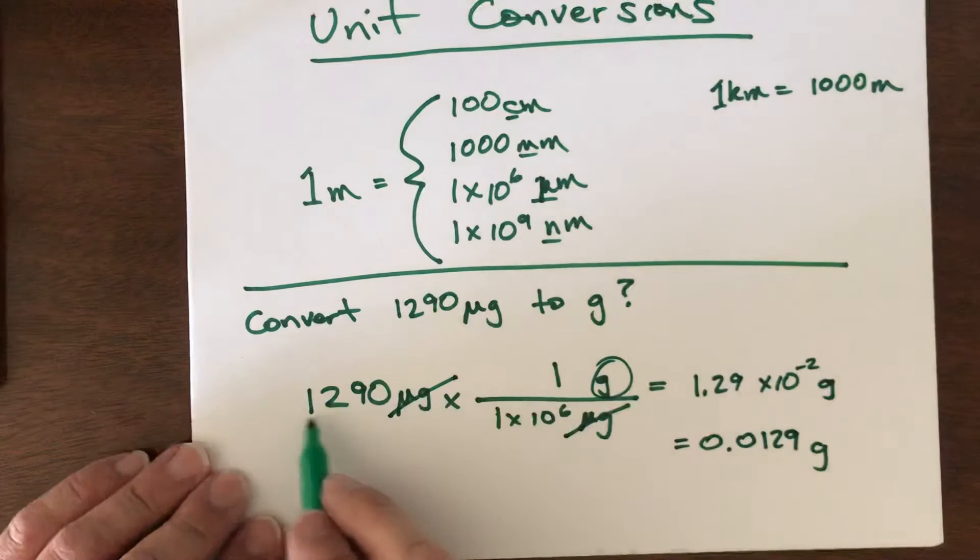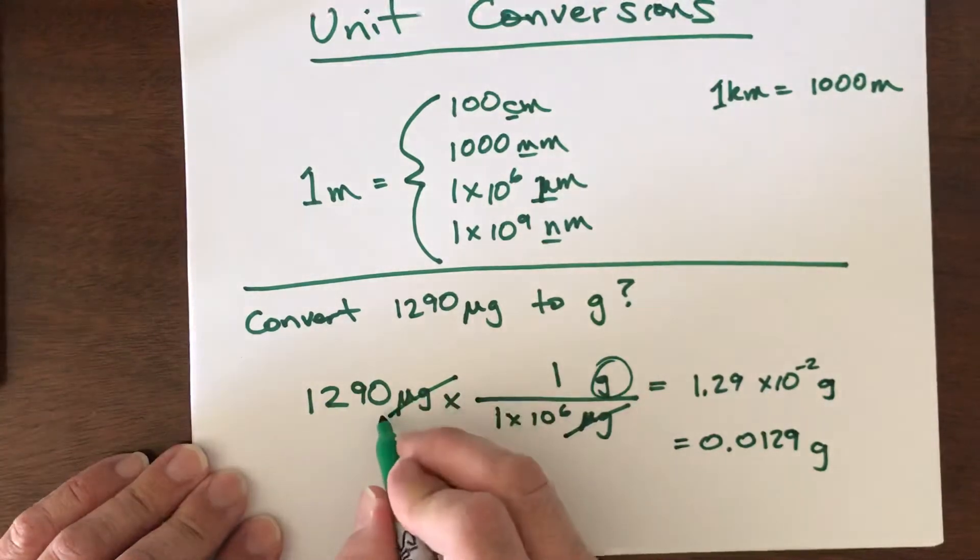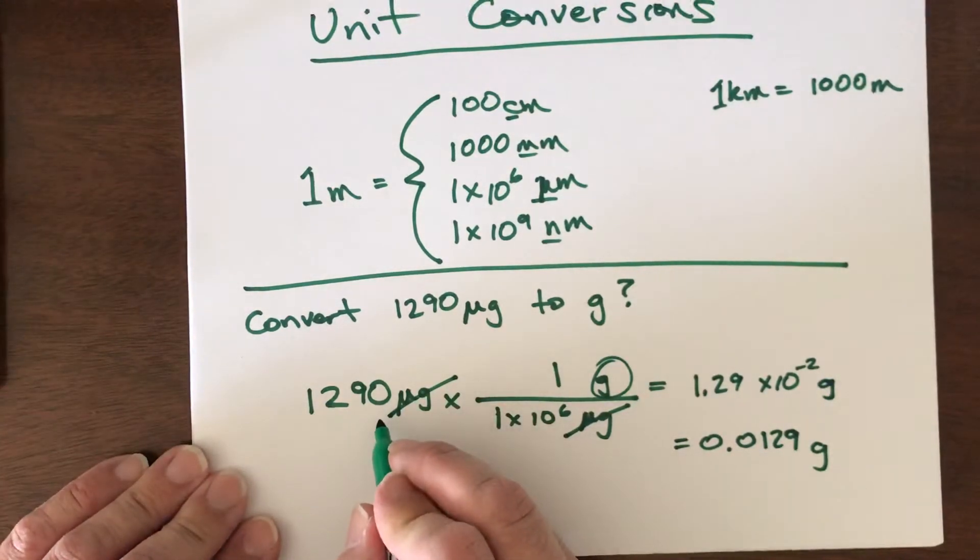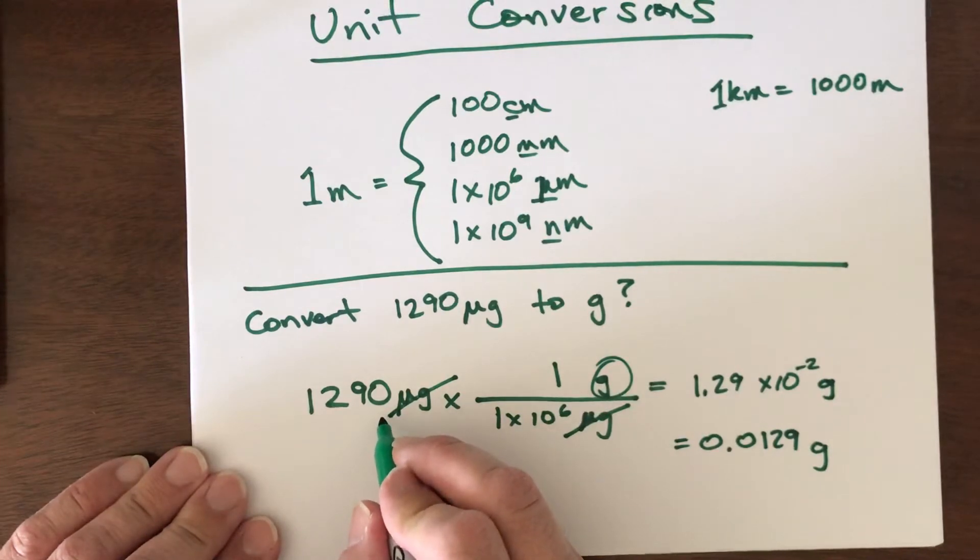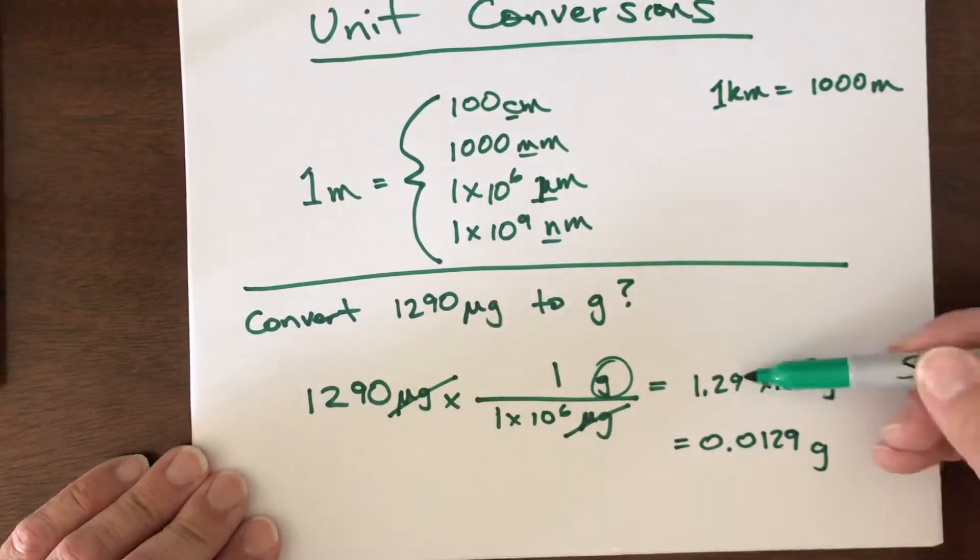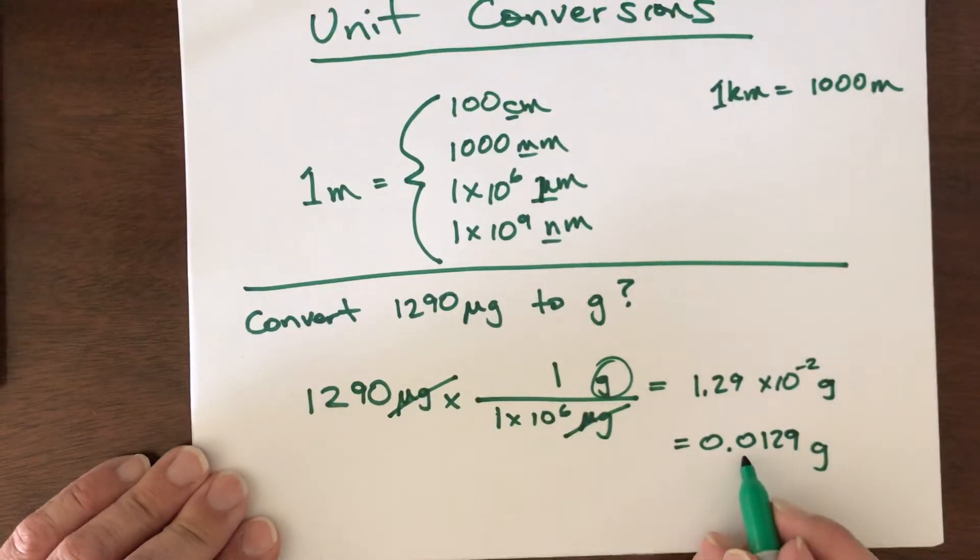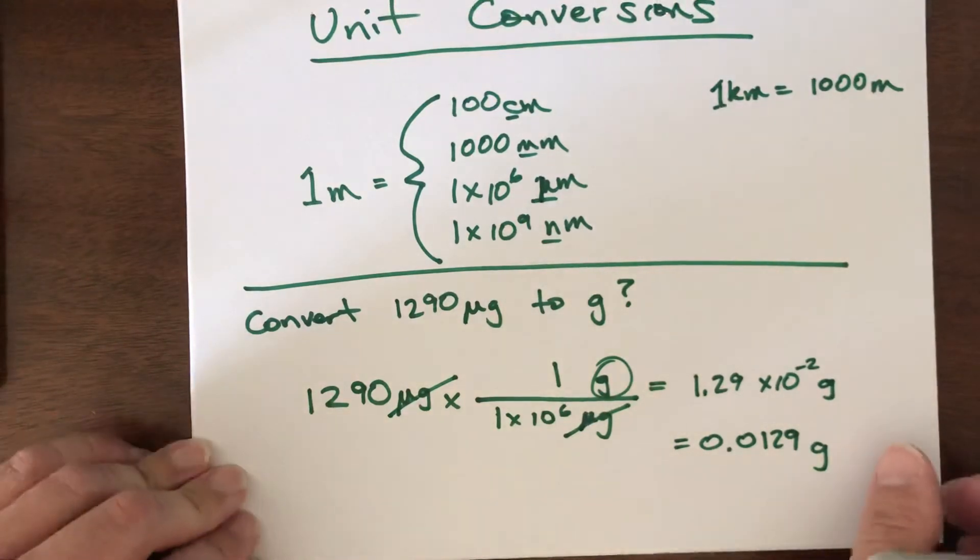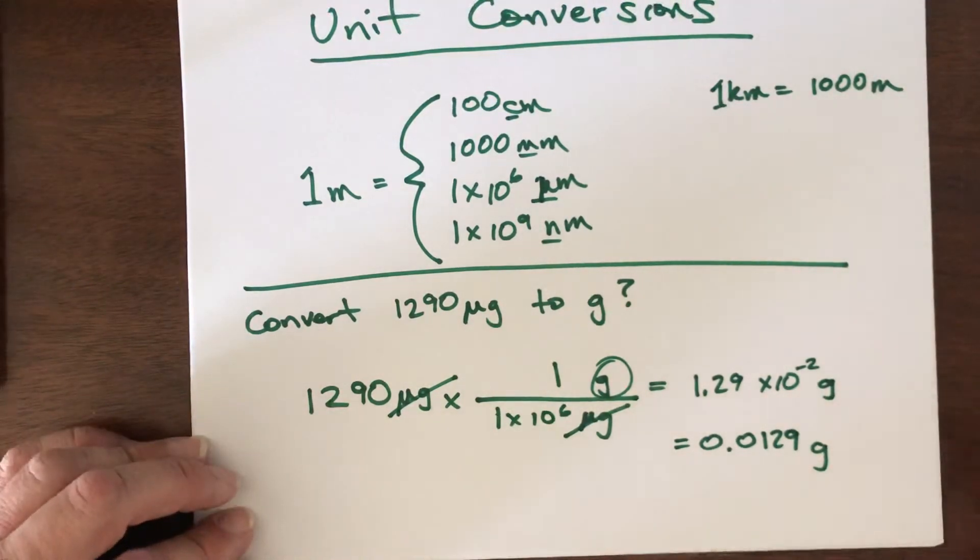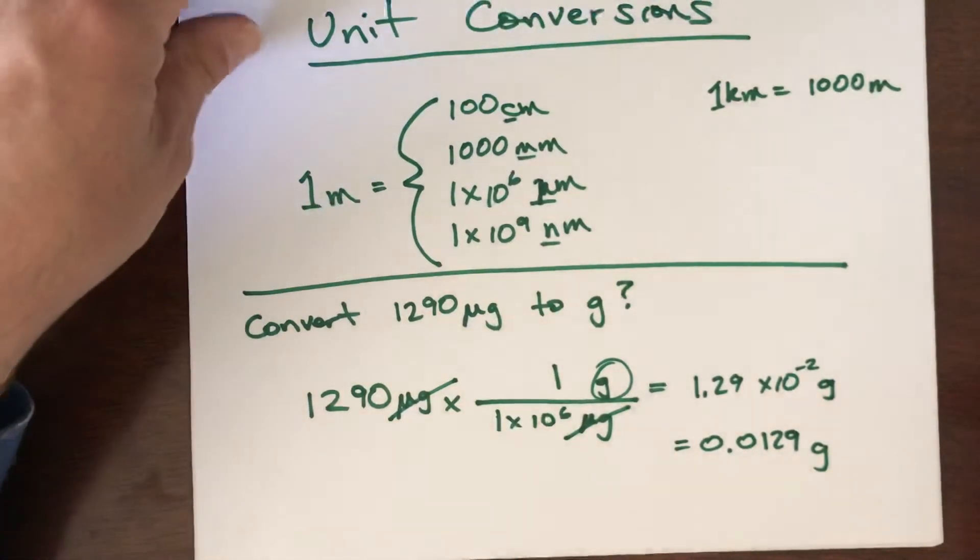Notice that we started with three significant digits because that zero there is not significant. It's a leading zero, not an ending zero after a decimal, so that doesn't count as significant. So we've got three significant digits there, we have three here, we have three here. That zero is not significant, it's not an ending zero after decimals, it doesn't count.